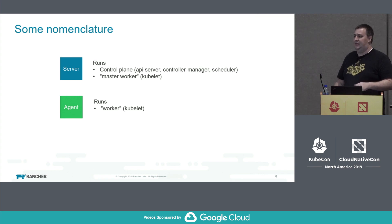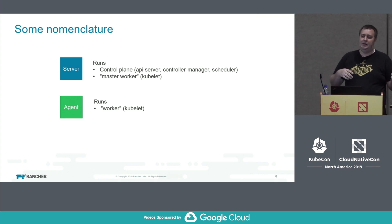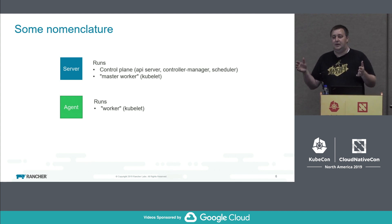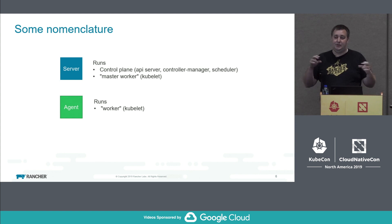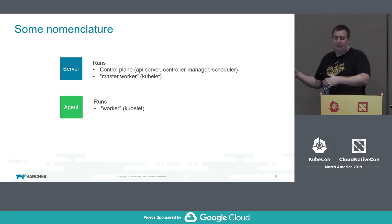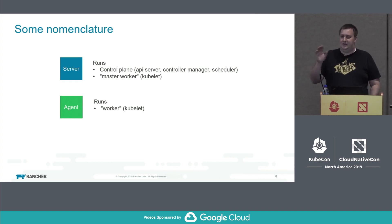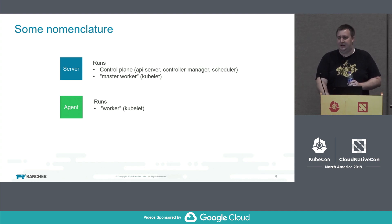As I get into the architecture, we separate the K3S command line into two things: server and agent. Server means running the control plane — API server, controller manager, and scheduler — and it also runs the kubelet as a master worker. Agent is essentially just the kubelet, kube-proxy, and some other things. That's the nomenclature we use — server and agent — because it seemed easy for people to conceptualize.